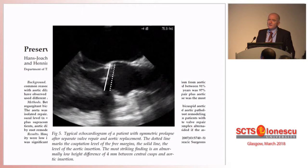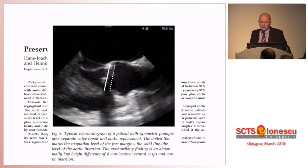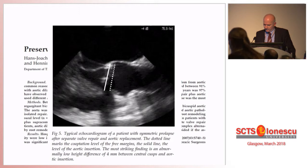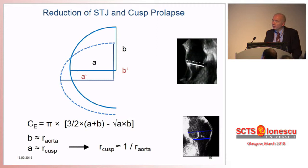One important aspect is that remodeling and re-implantation do not always reach the goal of normal valve function at the end of the operation. I made the same mistakes — this was about 15 years ago. In bicuspid valves, I had to re-operate some patients who had an abnormal valve form.